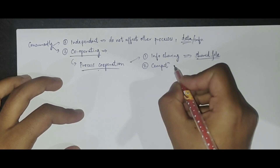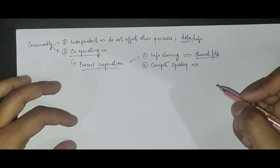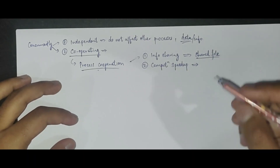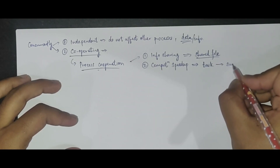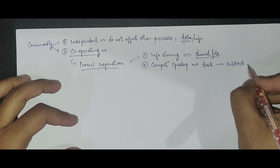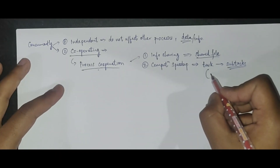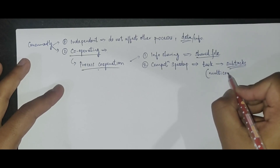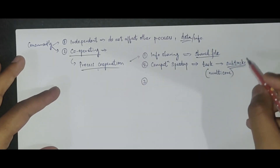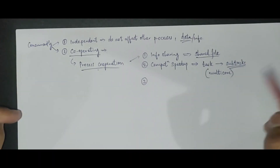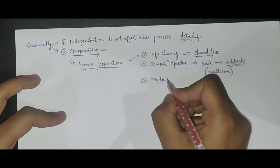A second reason is computational speedup. If there is a task and we want to run it faster, we can break it into multiple subtasks and run all these subtasks concurrently. This would be possible only if we have a multicore system, and in such a case all the subtasks running need to have some kind of cooperation between them.